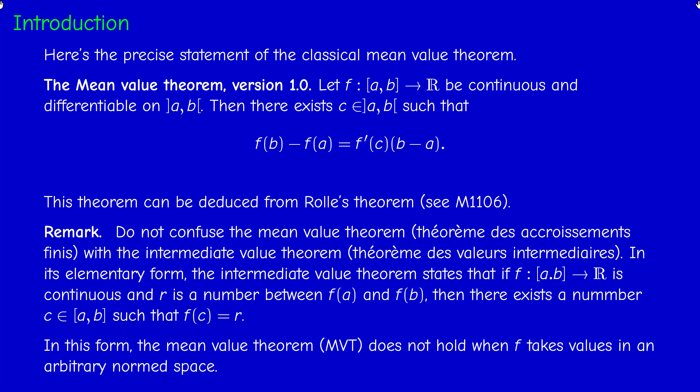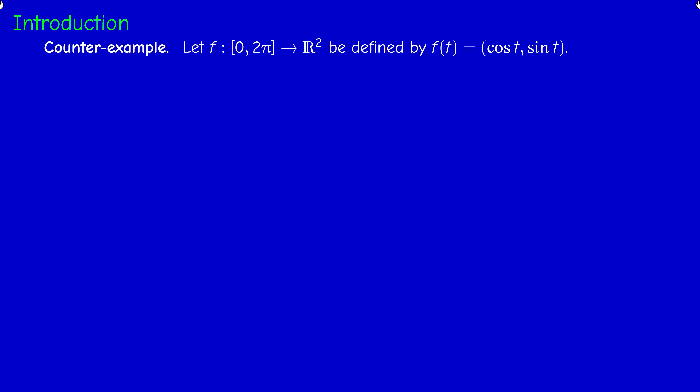As we said in the introduction of the course, we would like to generalize this theorem to functions defined between Banach spaces or normed spaces. However, in this form it cannot be extended — this theorem does not hold if we consider a function from a subset of a normed space into another normed space. Let me give an example: consider the function defined on [0, 2π] taking values in ℝ², with components (cos t, sin t). It is 2π-periodic.